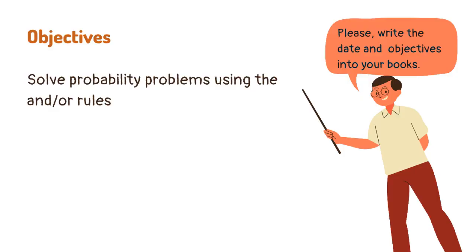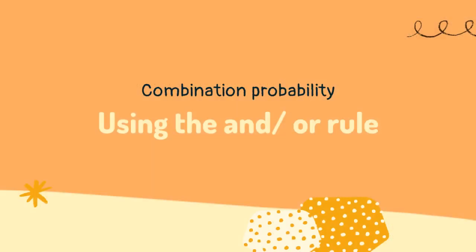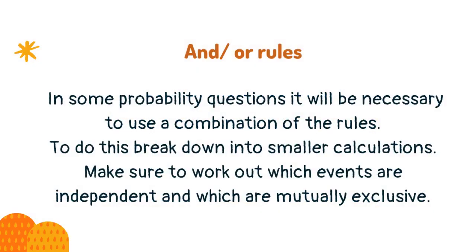Today you will learn about the and/or rule. In some probability questions, it will be necessary to use a combination of the rules. To do this, break down into smaller calculations. Make sure to work out which events are independent and which are mutually exclusive.